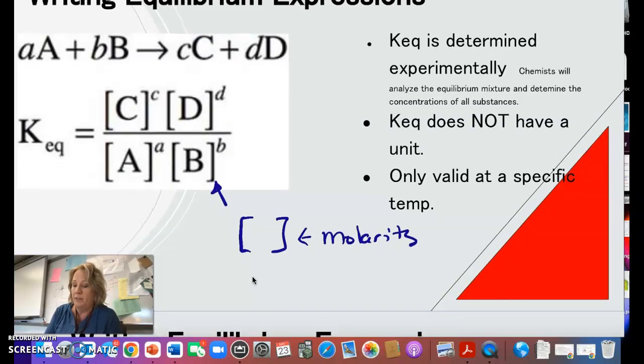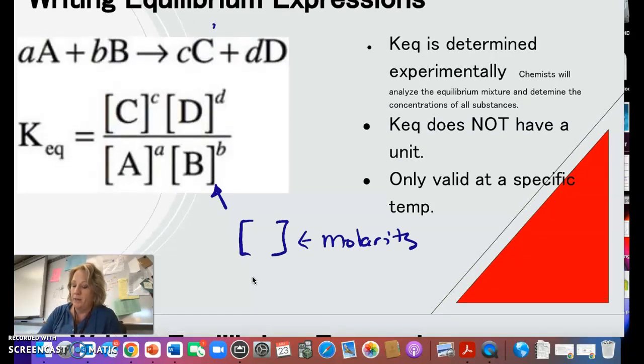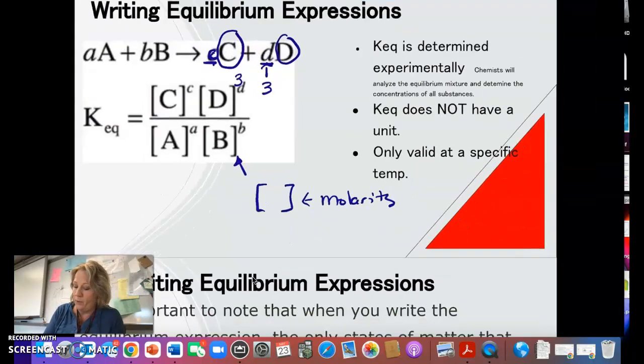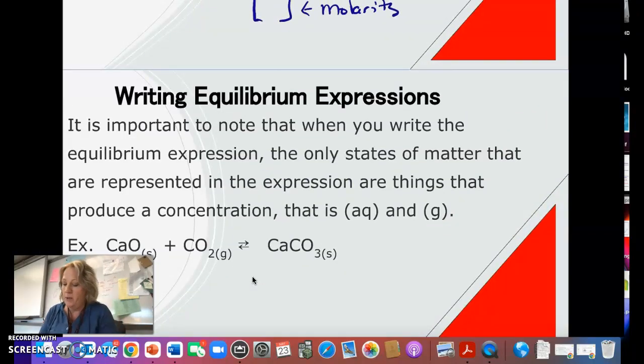So an equilibrium expression, you can see these are my products. In front of them would be the coefficients of the balanced equation or the number of moles of those. So what you do is you take the molarity and you raise it to the power of the coefficient. So let's say this d had been a 3, then we would have cubed the d values molarity. So let's practice.